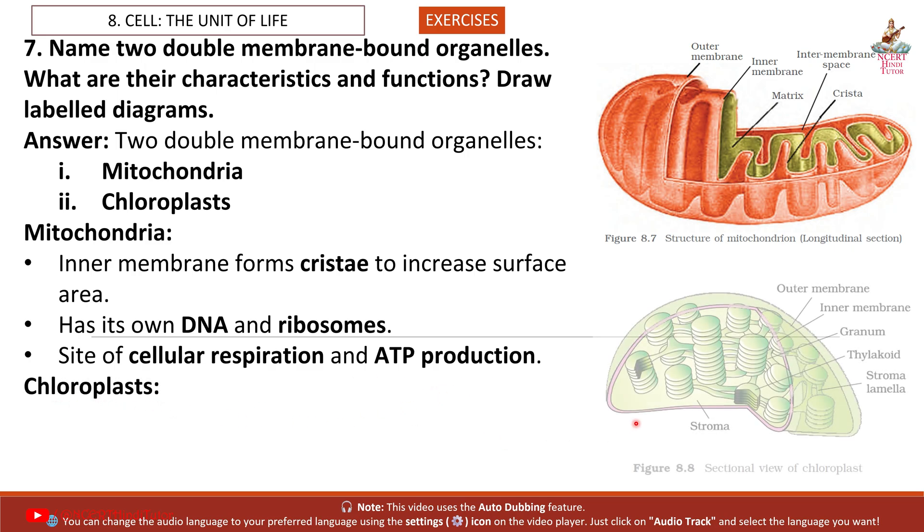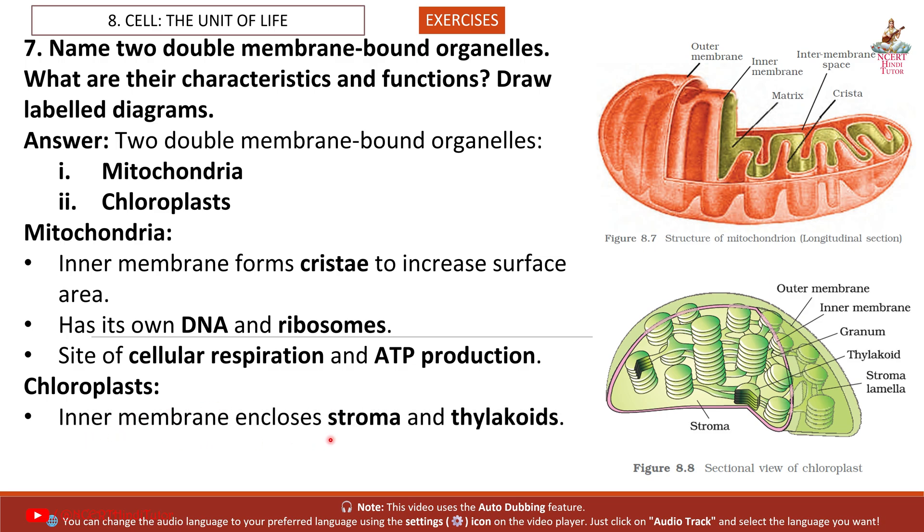Chloroplast: So friends, this is the diagram. Inner membrane encloses stroma and thylakoids. Contains chlorophyll, owns DNA and ribosomes. Site of photosynthesis.